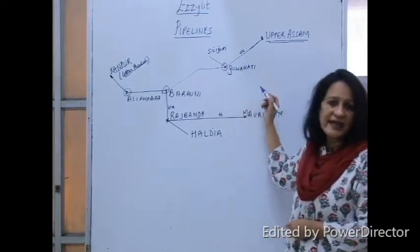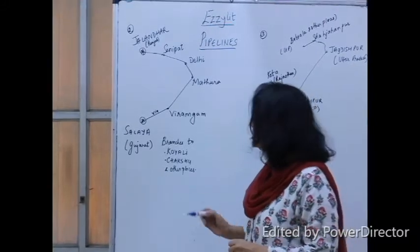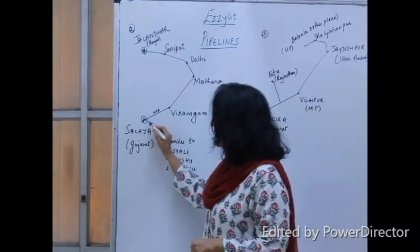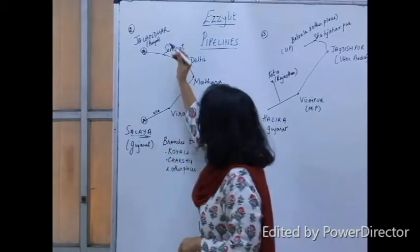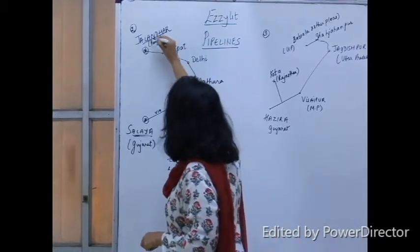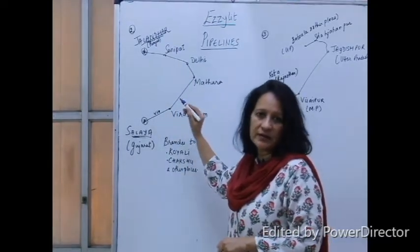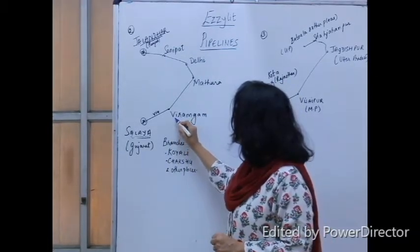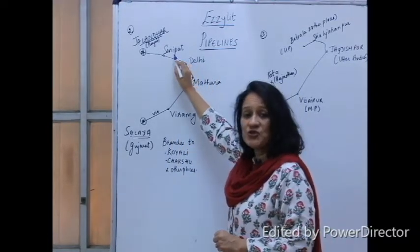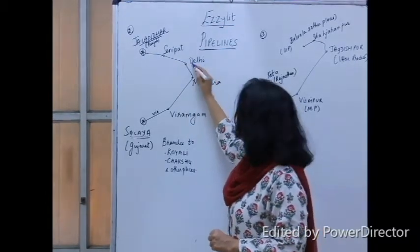Now we come to the second pipeline network, that is Salaya in Gujarat. This is your main place: Salaya in Gujarat to Jalandhar in Punjab. These are your two main places which you have to remember, the end points, via Virangam, Mathura, Delhi, and Sonipat. Like I say, remember that your capital is the third place in these four places.